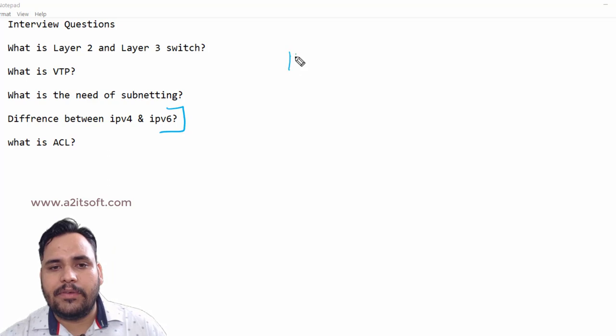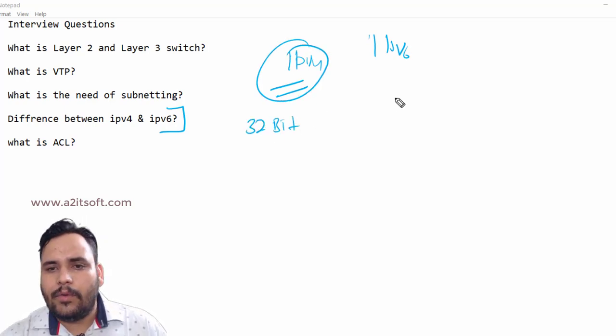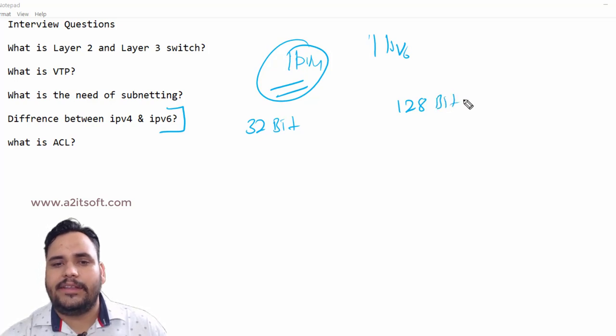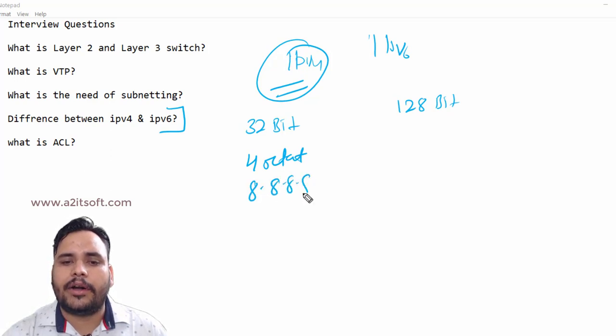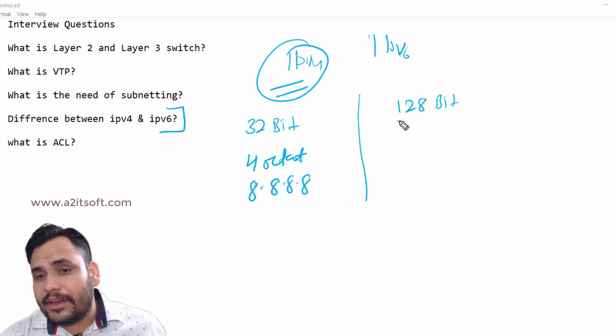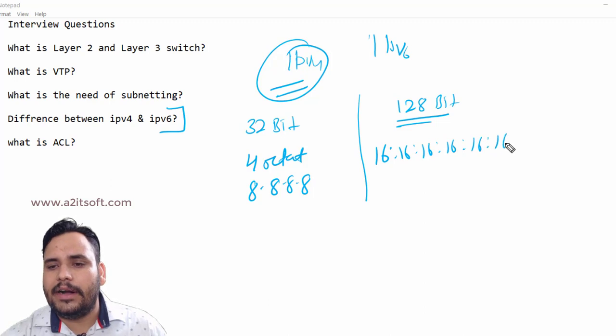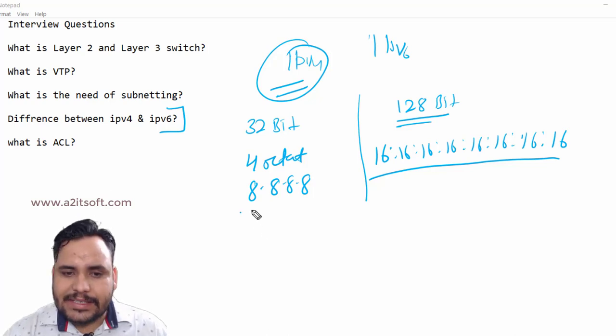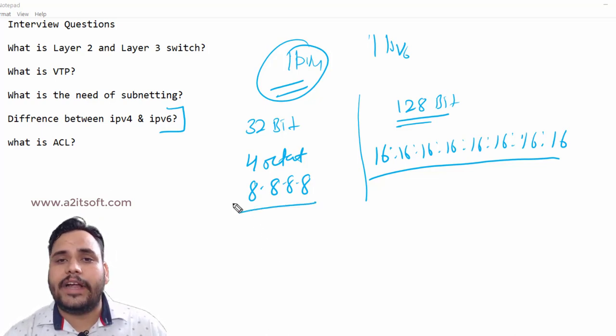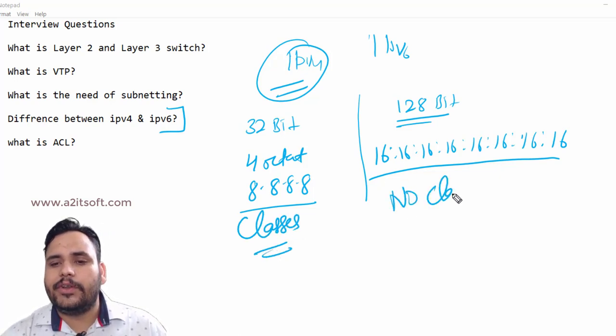Let's move on to IPv4 and IPv6 - what is the difference? First of all, IPv4 is a 32-bit address, IPv6 is a 128-bit address. In IPv4 we have 4 octets like 8.8.8.8, but IPv6 is divided by 16, 16, 16 - in hexadecimal parts, like 8 times 16. Network IDs and host IDs are based on classes. We have classes in IPv4 but in IPv6 we don't have any classes.